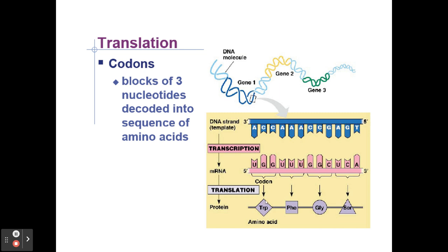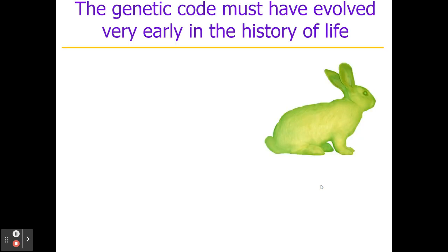UGG codes for tryptophan, UUU codes for phenylalanine, GGC codes for glycine. They also figured out that AAA coded for proline, CCC coded for lysine, but GGG did not code for anything. Then they had to go through and figure out all of the other codons — it took a lot of work.